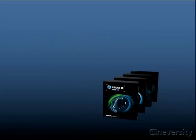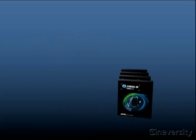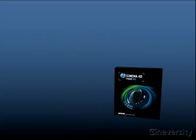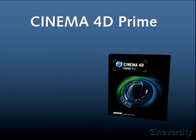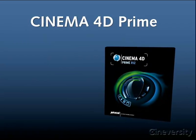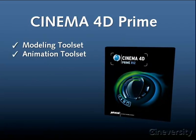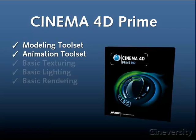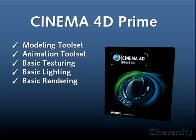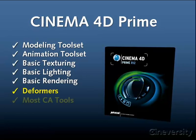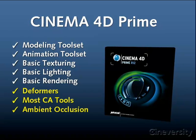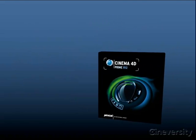Here's a brief overview of the new Cinema 4D product line. Professional 3D starts with Cinema 4D Prime. This powerful package includes all of Cinema 4D's core modeling and animation functions, as well as most of the texturing, lighting, and rendering features. Cinema 4D Prime includes all but a couple of specific deformers, most of the character animation tools, and ambient occlusion.